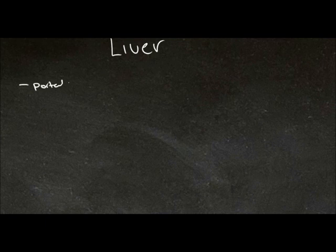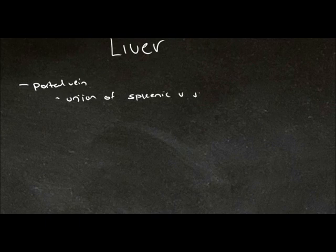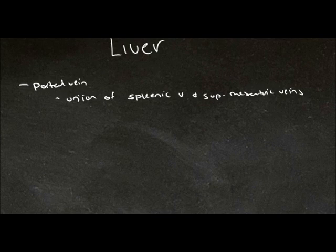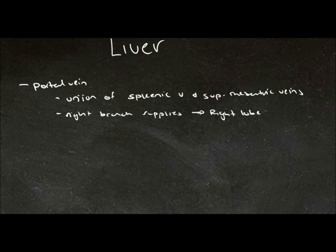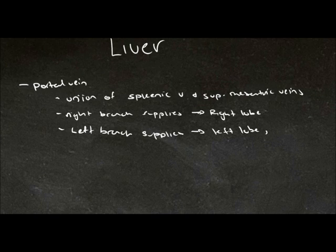The portal vein is formed by the union of the splenic vein and the superior mesenteric vein. The right branch supplies the right lobe. The left branch supplies the left lobe and also the caudate and quadrate lobes.